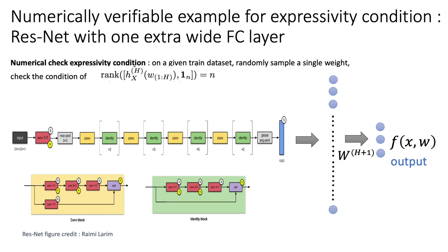a single weight and check this randomly sampled weight vector whether it satisfies the expressivity condition, which is a full rank condition stating that the span of the last hidden layer h and 1 is having the rank of the number of training data size.